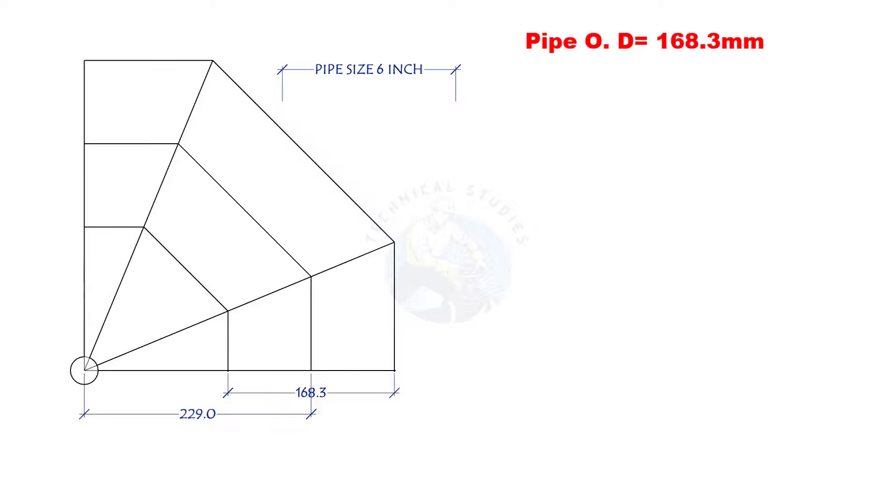This is a 6-inch pipe. The OD of the pipe is 168.3 mm. The center radius of the mitre is 229 mm, but this formula is applicable for any radius.